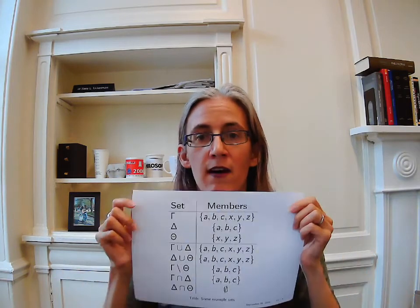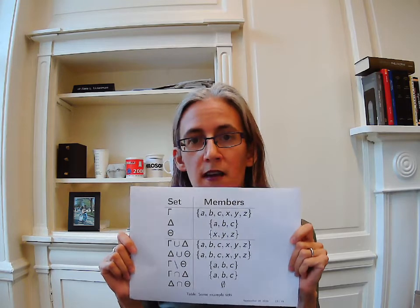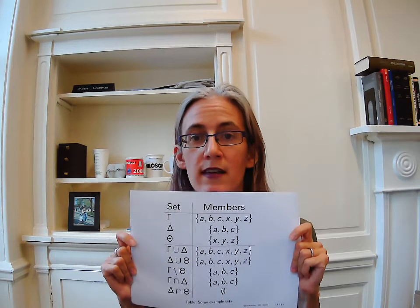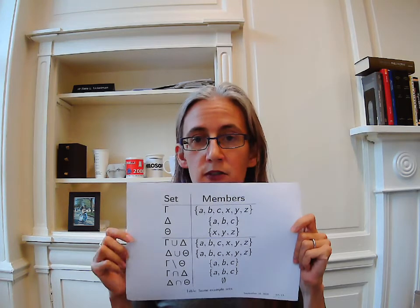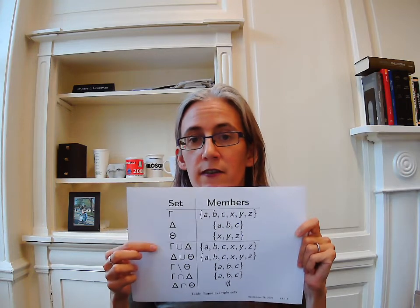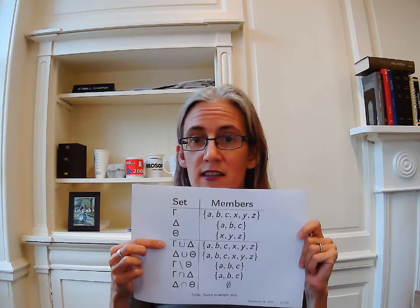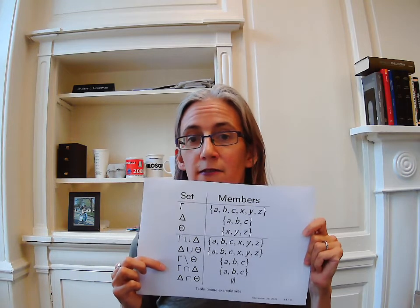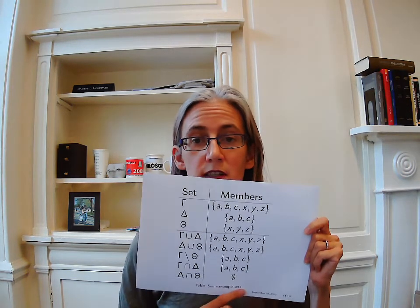Here we have some examples. You can indicate the membership of a set by putting the elements between curly brackets. We've got one set that has a, b, c, x, y, and z; one set that has just a and b; and another that has x, y, and z. You can take the union of gamma and delta — since everything in delta was already in gamma, you just get the same set back. If you take delta and theta and put those together, you get something identical to gamma. The difference between gamma and theta is a, b, and c. The intersection of gamma and delta is a, b, and c. If you take the intersection of delta and theta, they have no members in common, so that gives you the empty set.